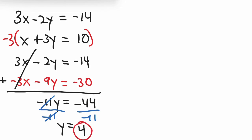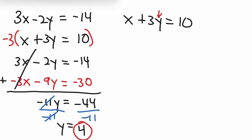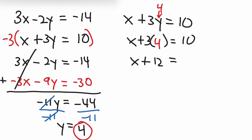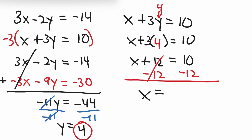Now we have y — let's find out what x is. I'm going to use the second equation. Plug in 4 for y: x plus 3 times 4 equals 10, or x plus 12 equals 10. Subtract 12 from both sides and we get x equals 10 minus 12, which is negative 2. So our solution to this system is x equals negative 2 and y equals 4.